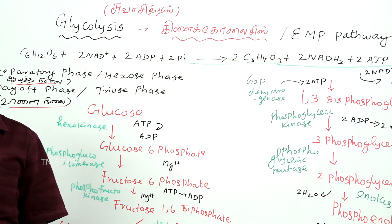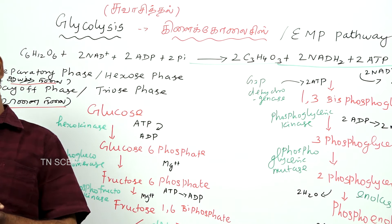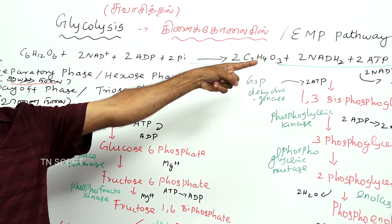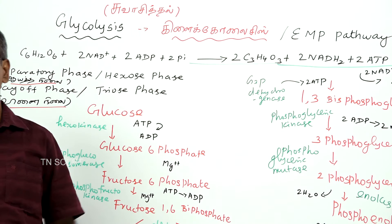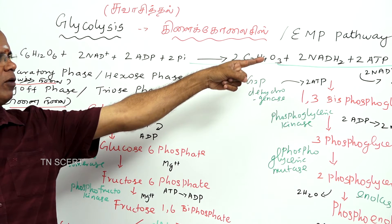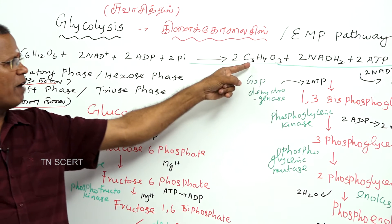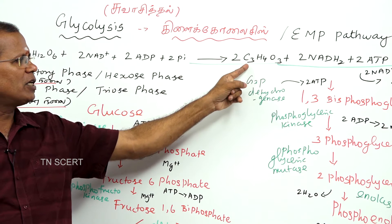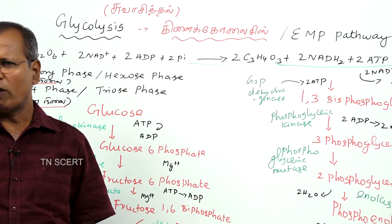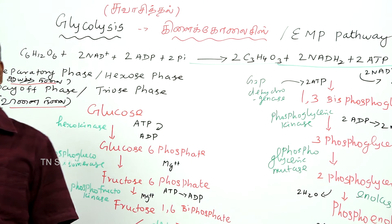This process takes place in the cytoplasm. In this process, two NADH2 and two ATP molecules are formed. The molecular formula of pyruvic acid is C3H4O3.